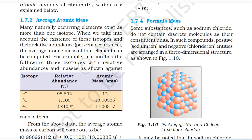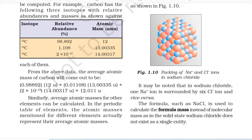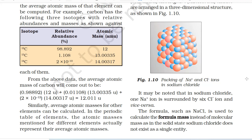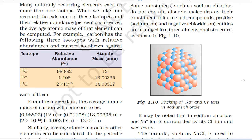1.7.2 Average Atomic Mass. Many naturally occurring elements exist as more than one isotope. When we take into account the existence of these isotopes and their relative abundance (percent occurrence), the average atomic mass of that element can be computed. For example, carbon has three isotopes. From that data, the average atomic mass of carbon will come out to be: 0.98892 × 12u + 0.01108 × 13.00335u + 2 × 10⁻¹² × 14.00317u = 12.011u. In the periodic table of elements, the atomic masses mentioned for different elements actually represent their average atomic masses.